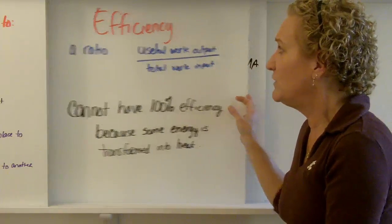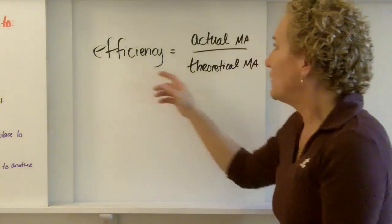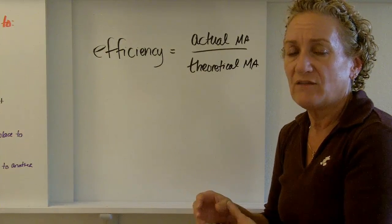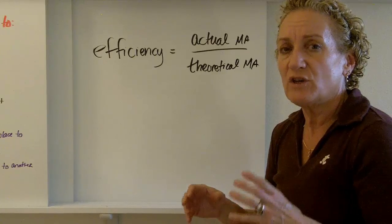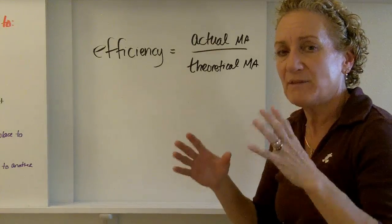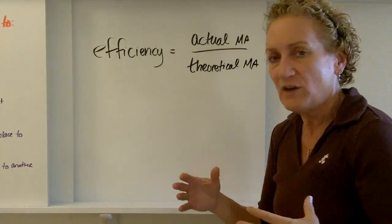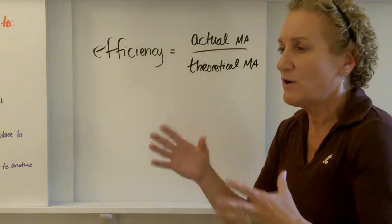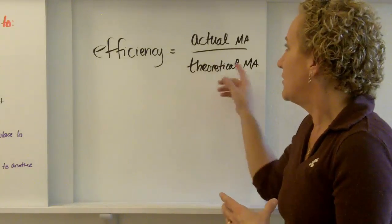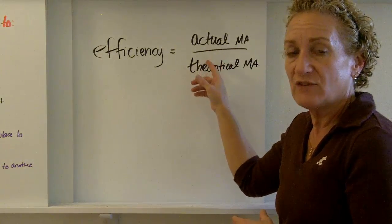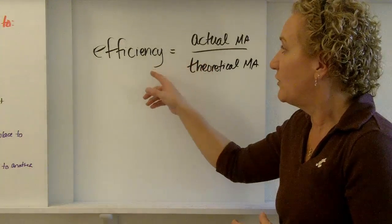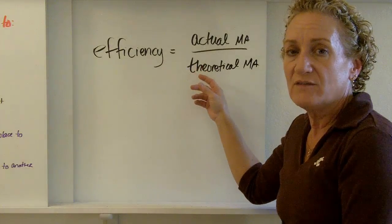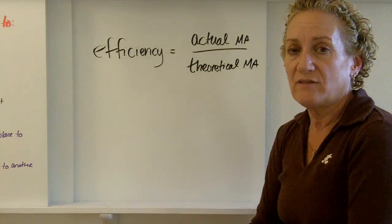There's one more way to calculate efficiency, though, and you can also calculate efficiency by taking the actual mechanical advantage over the theoretical mechanical advantage. Now, theoretical is what you should get if everything was absolutely perfect, and you lost no energy to heat, and everything was ideal, and there was no friction, and no air resistance, and none of that. That's the theoretical, but what you actually get is way different. So, if you want to calculate efficiency a different way, you take actual mechanical advantage, and you divide that by theoretical mechanical advantage. All right.